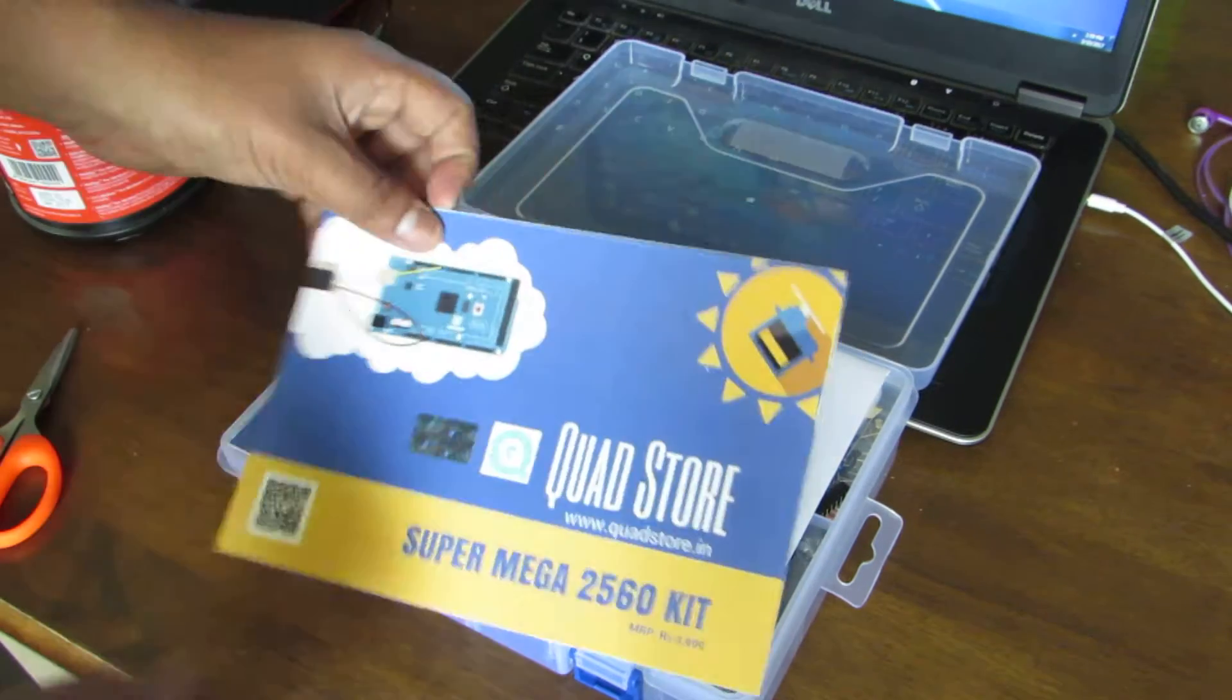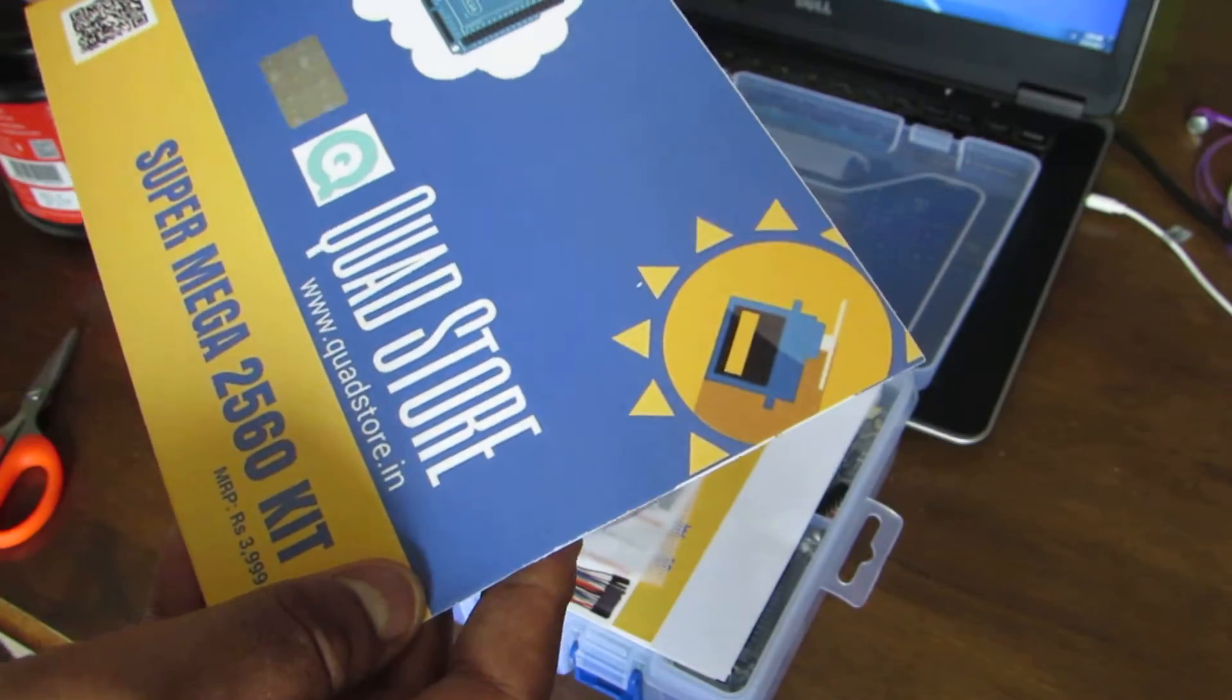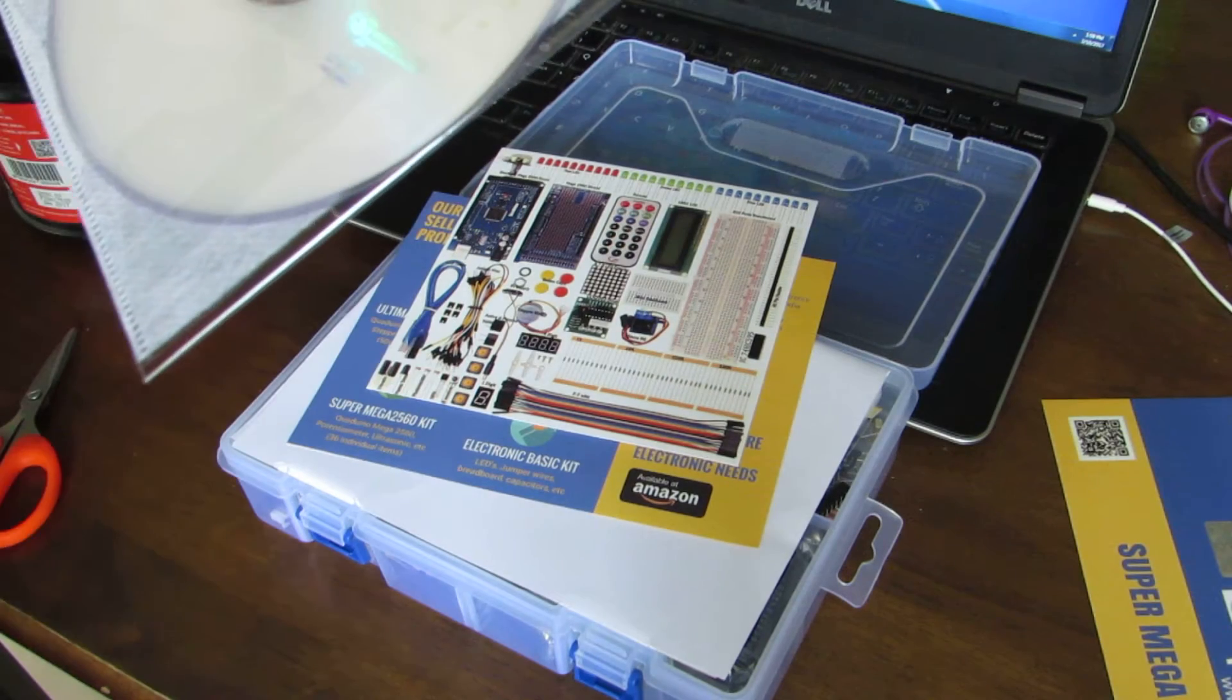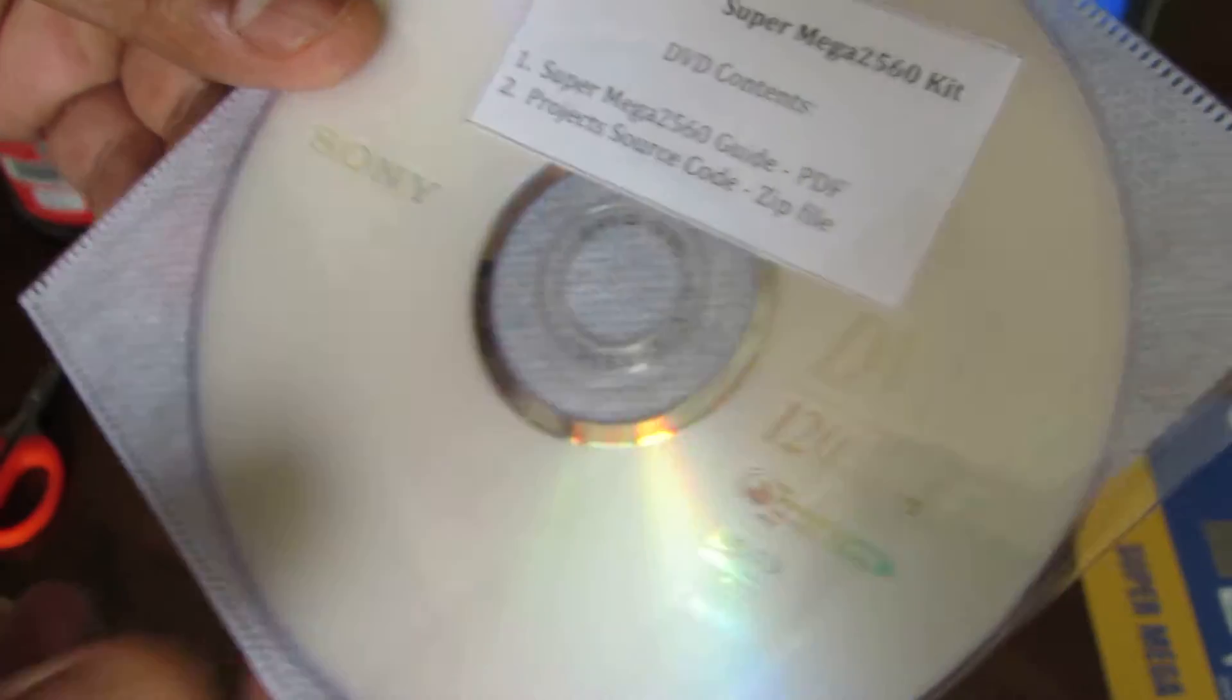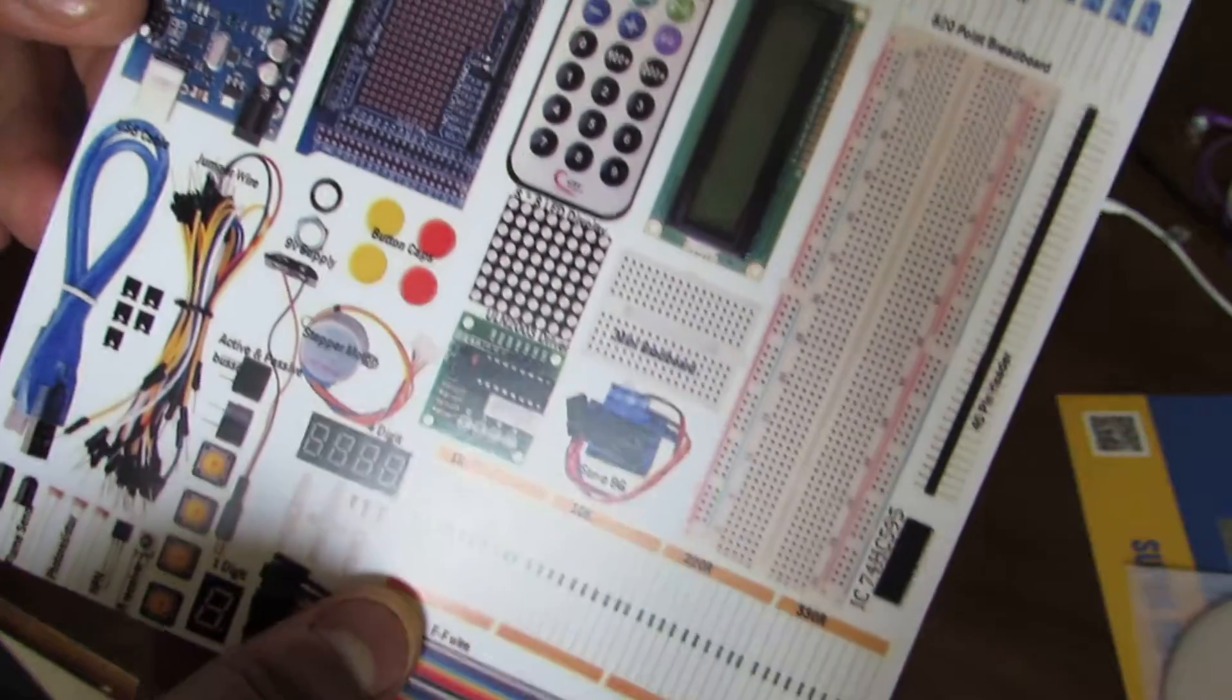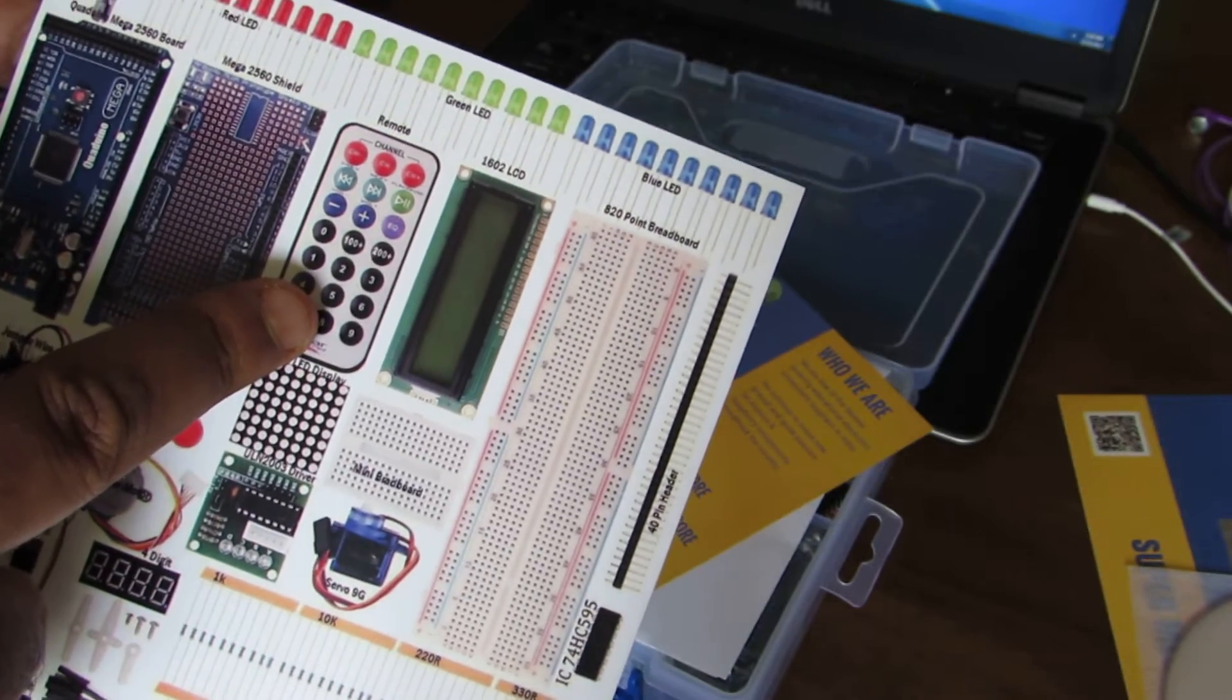All right, what do we got here? We got this pamphlet with some hologram, Quad Store. Comes with a bunch of stuff in it. We got the project CD. Yeah, so it's got a guide and then project source code, that'd be cool. And here are the components, these are all the things that they're giving.